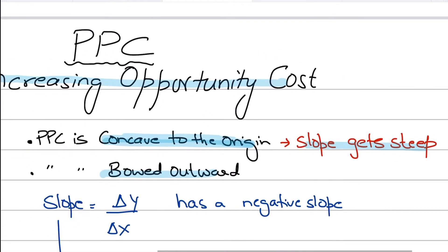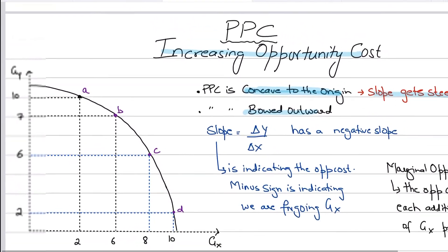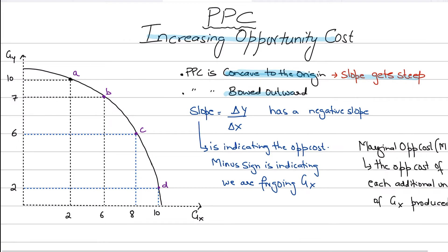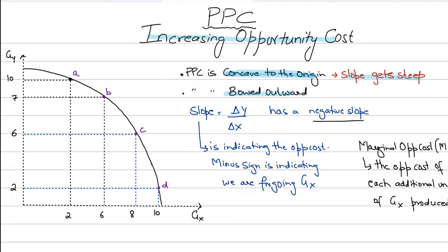For an increasing opportunity cost PPC, that is how it is drawn — concave and bowed outwards — and what happens is that your slope basically gets steeper. The slope is the change in Y over change in X. For a production possibility curve that is bowed outwards or concave, it has a negative slope, and the negative slope indicates there is an opportunity cost, because as you increase the production of good X, good Y has to be foregone.